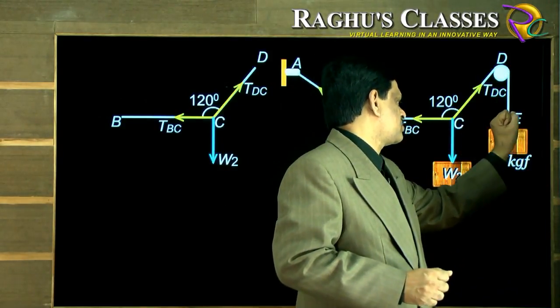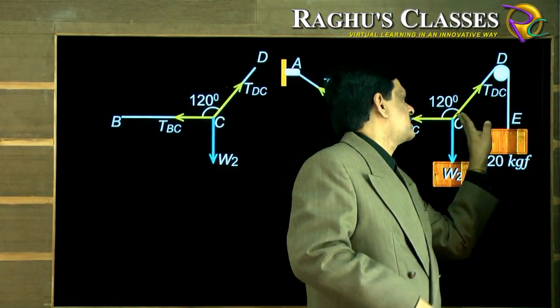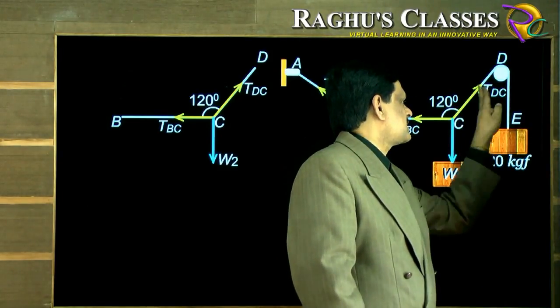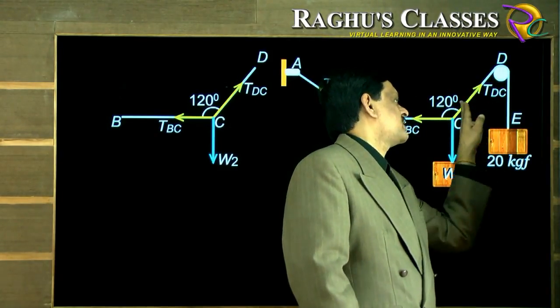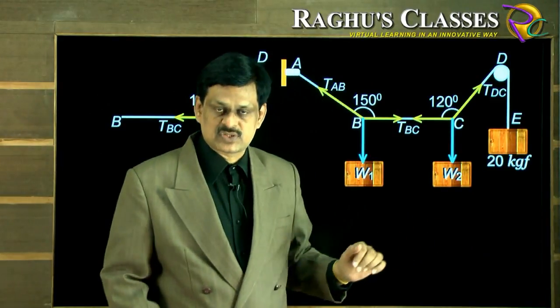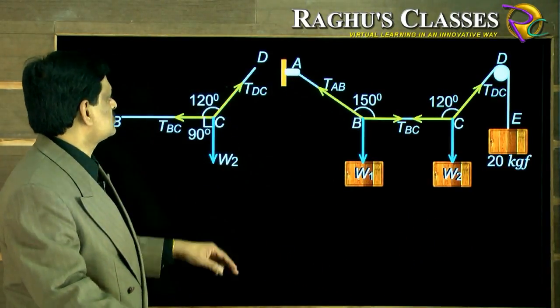When there is no friction, all this pulling force will be transferred through the same wire and comes here and acts in this direction. So this pull is exactly transferred here. TDC is exactly equal to 20 kgf because of the absence of friction.